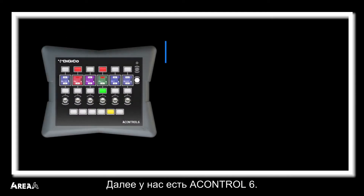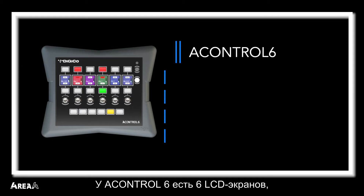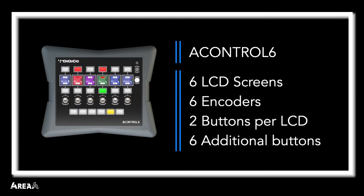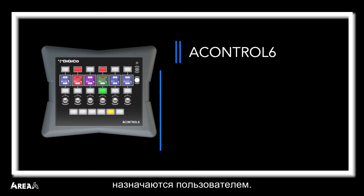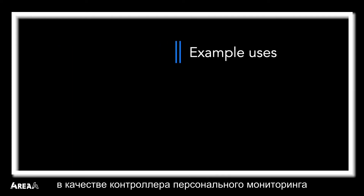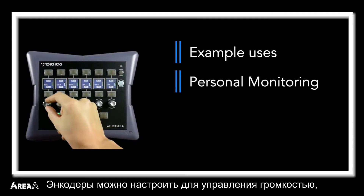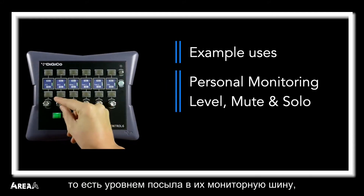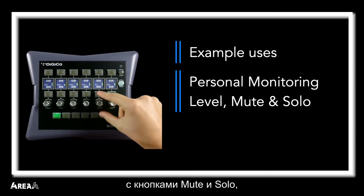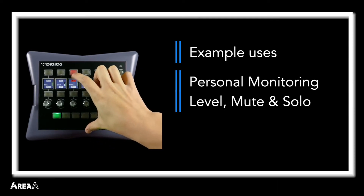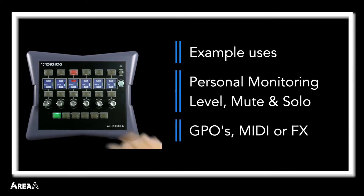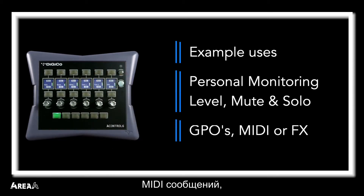Next up we have the A-Control 6. The A-Control 6 has six LCDs, each with their own dual function encoder and two buttons. The unit also has six additional buttons across the bottom. Like the A-Control 1, all of the buttons and encoders on the A-Control 6 are fully assignable. An example use could be as a personal monitoring unit for a musician — encoders set to control send levels to their mix bus, with mutes and solos, and buttons to control layers, banks, GPOs, MIDI messages, or effects.